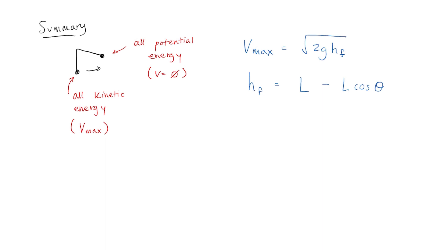h_f can be found using the equation h_f equals L minus L·cos θ. And with that, that's the end of this lesson on pendulums and how you can use the conservation of energy to understand a pendulum's swinging motion.